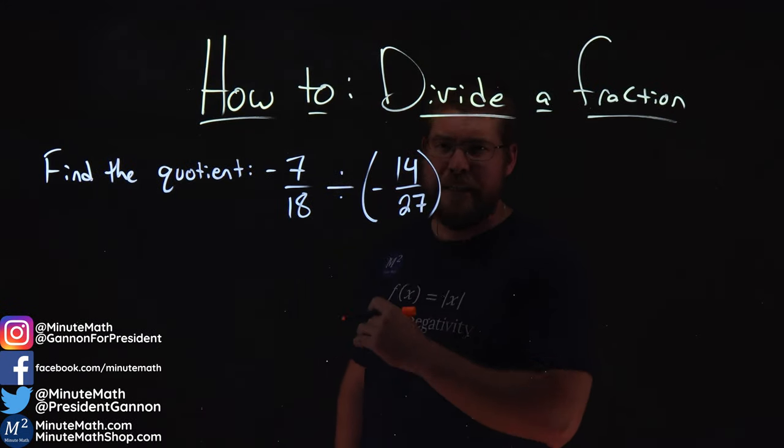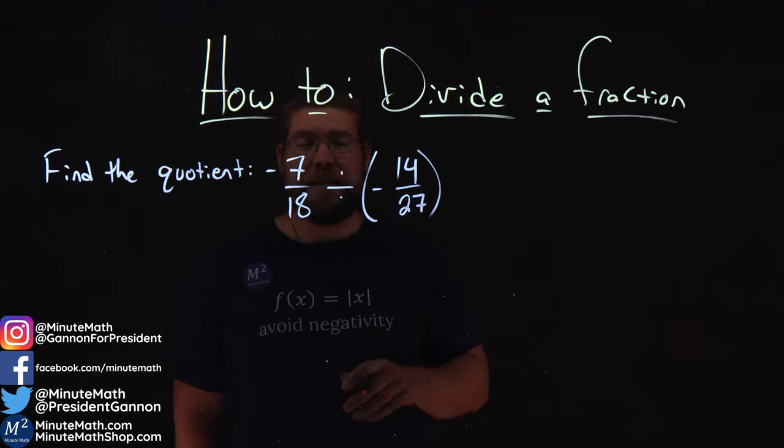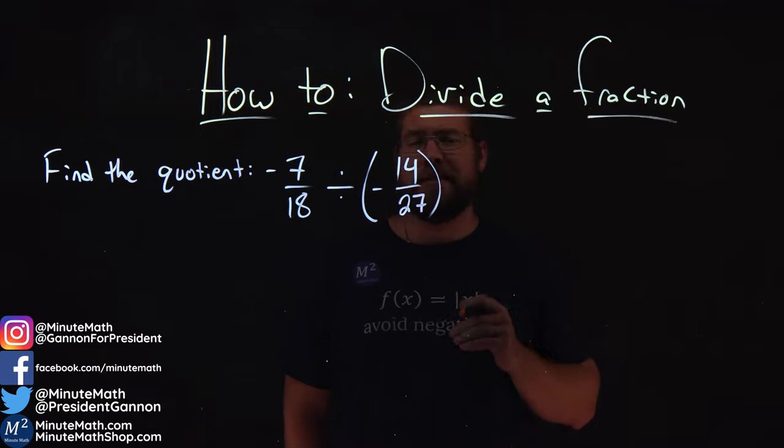We're given this problem here. Find the quotient of negative 7 over 18 divided by negative 14 over 27.